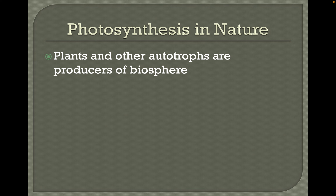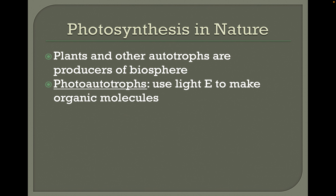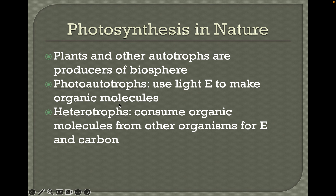In nature, plants and other autotrophs are producers of the biosphere. These are the organisms that can convert light energy into chemical energy, and we call them photo-autotrophs. Chemical energy is stored in high-energy organic molecules like glucose. Heterotrophs, in contrast, have to consume those organic molecules from other organisms to get the energy and carbon that they need. Heterotrophs means 'other'; troph means 'to feed' — they feed off other organisms.